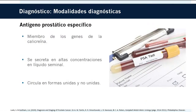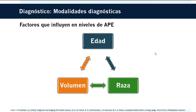El antígeno prostático específico es un miembro de la familia de genes de la calicreína humana, se secreta en altas concentraciones en el líquido seminal y circula en formas unidas (complejadas) o libres. Los factores que influyen en sus niveles incluyen la edad, la raza y el volumen prostático. Los afroamericanos sin cáncer de próstata tienen valores de antígeno más elevados que los de raza caucásica. El antígeno aumenta un 4% por mililitro de volumen prostático; el 30% y el 5% de la variación en los niveles se explican por el volumen de la próstata y la edad, respectivamente.